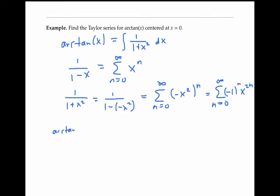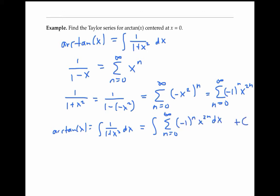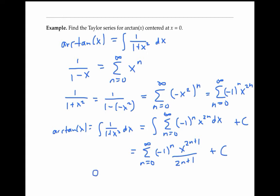Therefore, arctan(x), which is the integral of one over one plus x squared dx, is going to be equal to the integral of this power series, at least up to a constant. I can integrate this power series term by term to get the sum of negative one to the n times x to the 2n plus one divided by 2n plus one, plus a constant. To figure out the constant C, I can plug zero in for x on both sides of my equation. Since all of my powers of x involve a positive power of x — even when n equals zero, I've got x to the one — so if I plug in x equals zero, all of these terms go to zero, and arctan of zero is also zero. So plugging in x equals zero gives me zero equals the sum of a bunch of zeros plus C. In other words, the constant is zero.